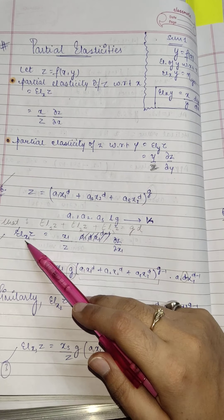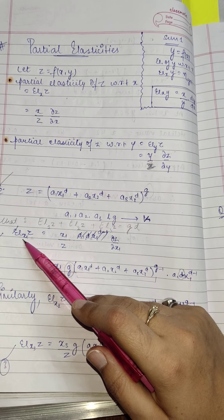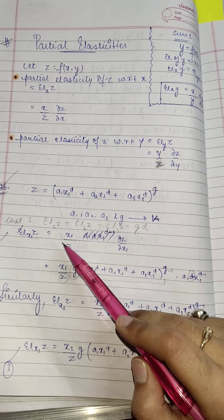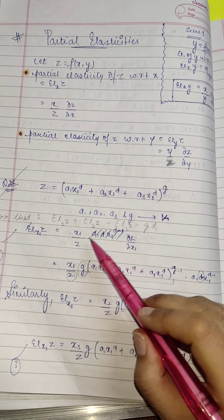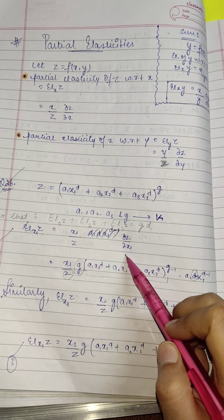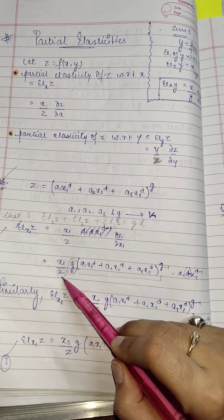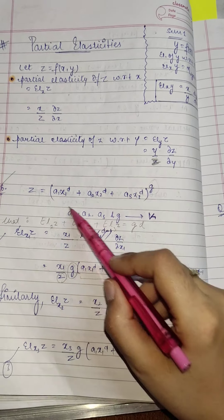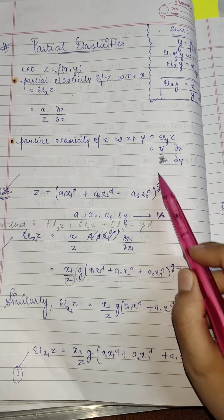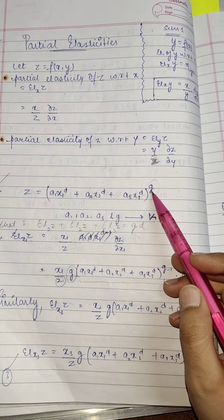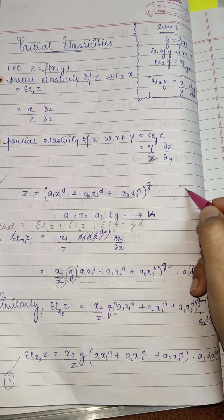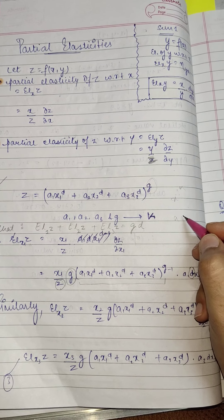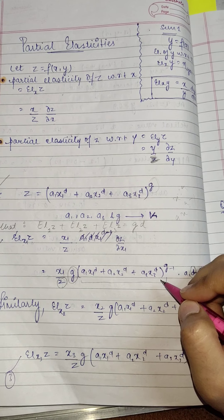Firstly, elasticity of z with respect to x1 will be independent variable upon dependent variable, that is z, times del z upon del x1. So x1 upon z times, derivating this partially with respect to x1. So that will be g will come over here since this is of the form x to the power a, so that will be a·x^(a-1).